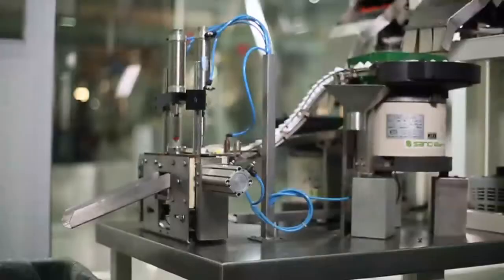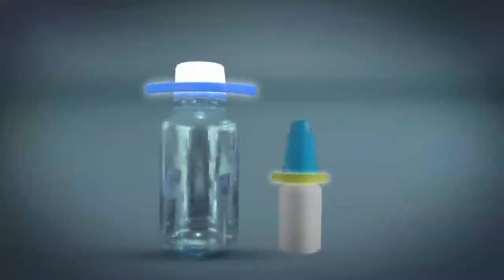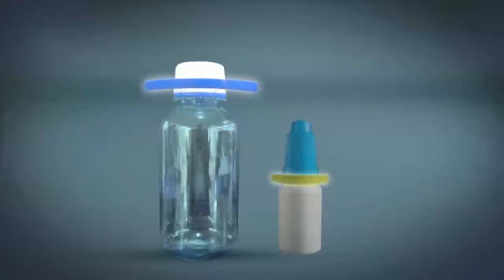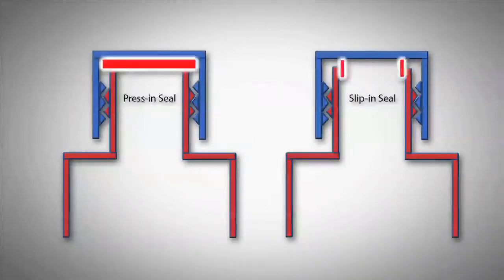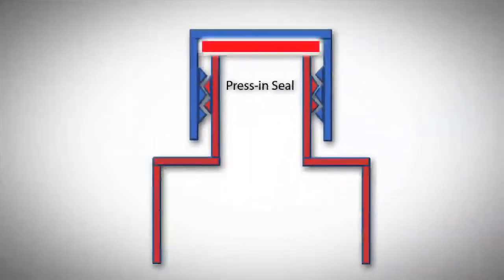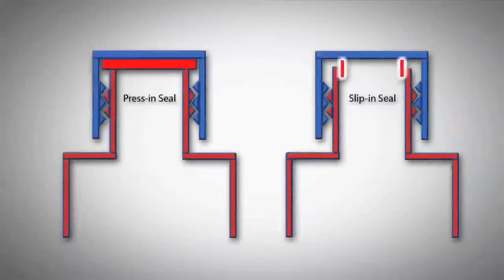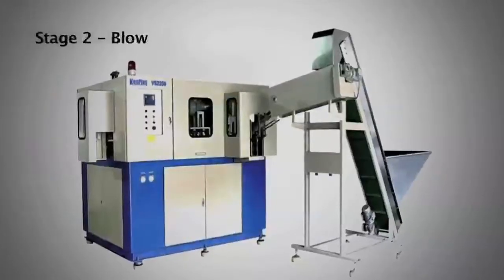The challenge becomes tougher when we decided to introduce a difficult to produce two-piece pilfer proof seal, targeted to build a barrier against counterfeit medicines. Reliable leakage control for syrup bottles was also a challenge, as perfection can only be achieved by using slip-in seal rather than press-in seal. This type of seal needs perfect circularity inside the neck of the bottle, which can only be achieved through two-stage pre-form process.